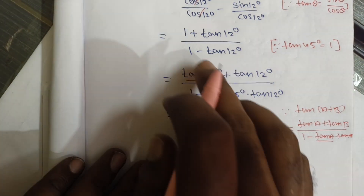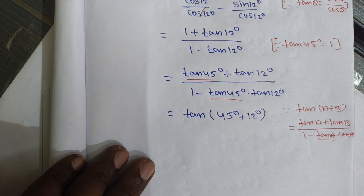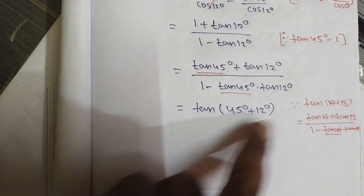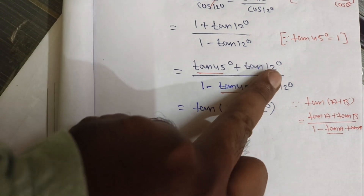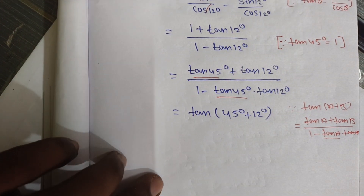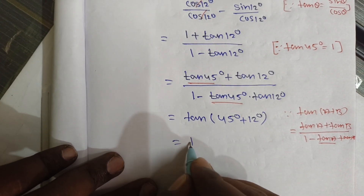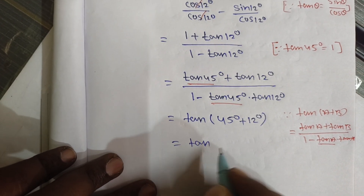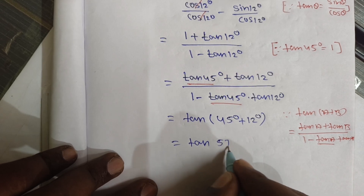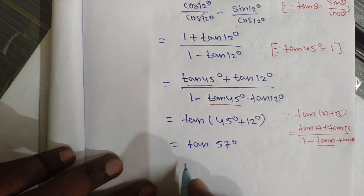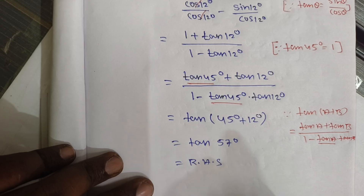So, applying the a plus b formula where a is 45 and b is 12, we get tan of 45 plus 12, which is tan 57 degree. So that is equal to RHS.